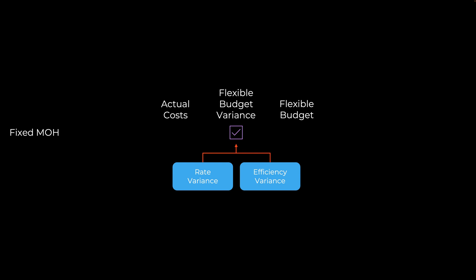If the flexible budget and the static budget are the same, the volume variance is zero. We can then consider the fixed manufacturing overhead flexible budget variance — again two components: the rate variance and the efficiency variance, which add up to the flexible budget variance. However, because we are talking about fixed manufacturing overhead, we are not really talking about how many hours, kilograms, or number of inputs used. That means there is no efficiency variance, so the flexible budget variance equals the rate variance for fixed items.